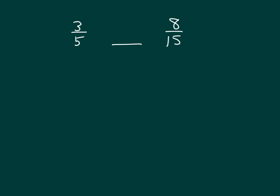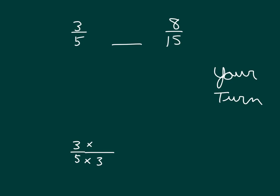Let's compare these two fractions — it's your turn. Draw a number line to compare them, and then also compare them by finding that common unit. Which of those fractions did you change for that common unit? Did you say three-fifths? What would you have multiplied by? We can rewrite three-fifths as nine-fifteenths, so we know that nine-fifteenths is bigger than eight-fifteenths.